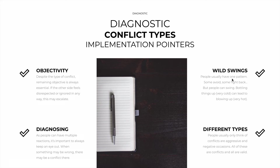The second is that people can have wild swings. People usually do have one pattern — some just avoid, some just become aggressive, and so on. But it is possible for people to swing wildly. For example, someone very aggressive can be put in their place, and in the future they don't speak their mind anymore because they're stubborn or they're pouting. But on the other hand, someone with a cold conflict who is withdrawn and bottling things up and doesn't speak up may end up blowing up and becoming very aggressive when they actually can't take it anymore. Diagnosing is crucial — as people can have so many different reactions, it's important to assess the ones they may have. When something may be wrong with them, there may be a conflict there.